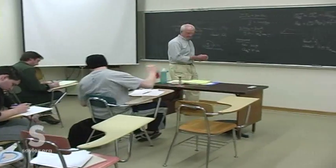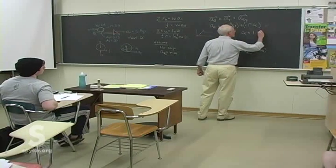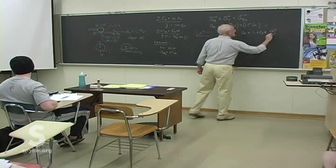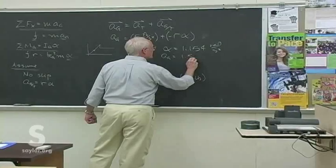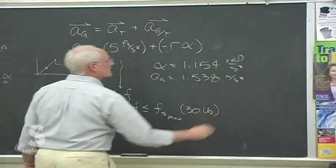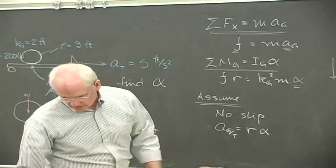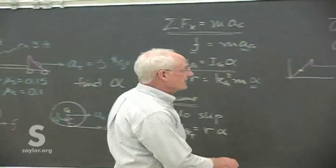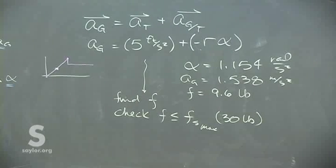Everything that's left is just algebra — double-check the numbers and we're done. Note that the no-slip equation is a_T = a_G - R·alpha, not simply a_G = R·alpha, because the acceleration of the contact point relative to the truck gives that relationship. We'll start again on Friday. Thanks, see you next time.